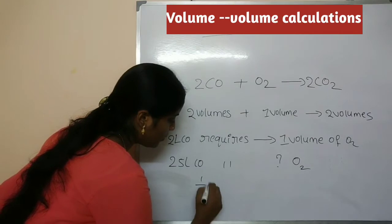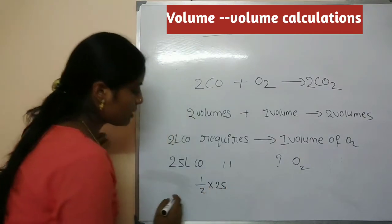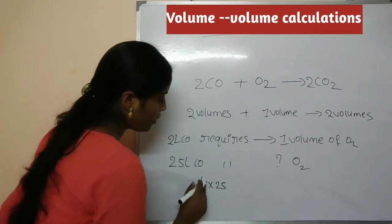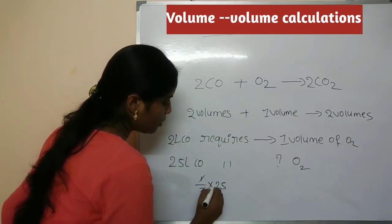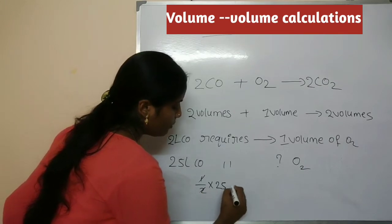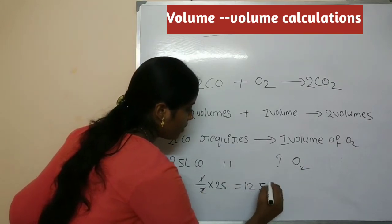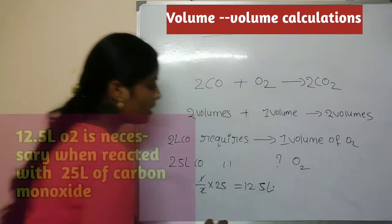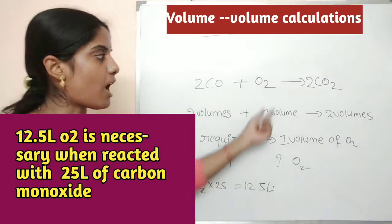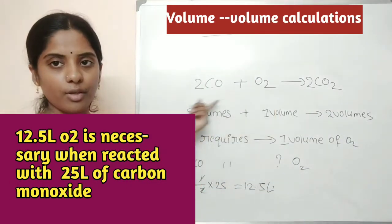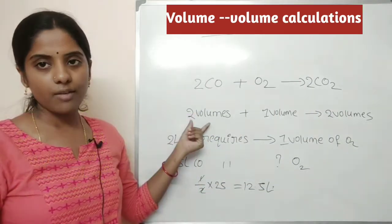Calculating: 1/2 × 25 = 12.5 liters of oxygen.